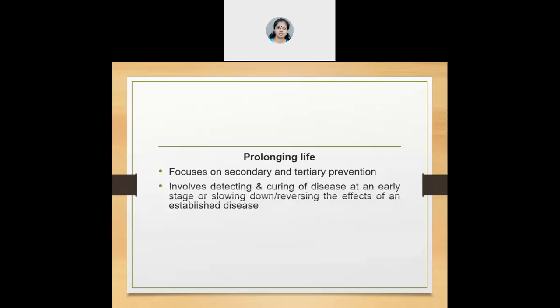The second dimension that public health aims at is prolonging life. The emphasis here is on detection and curing of a disease at an early stage, thereby slowing down or reversing the effects of an established disease. This relates to secondary and tertiary prevention.